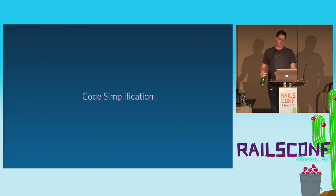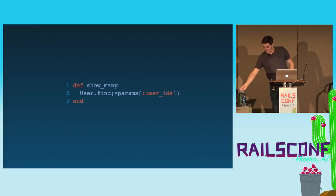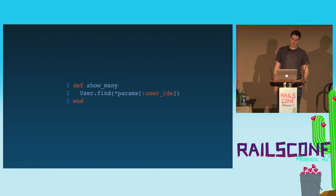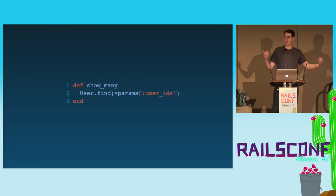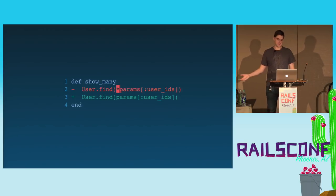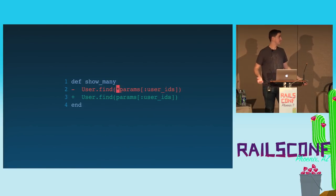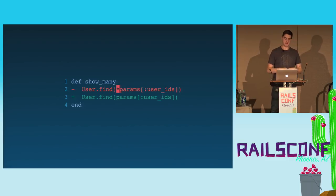Similar to dead code detection, mutation testing is also a great resource for simplifying your code. Here's another method inside a controller — we're taking in a user_ids parameter, which is presumably an array of integers, calling the user finder and splatting the input. The tool is going to say you don't actually need the splat here — you can just pass in the array and it behaves the same. So again, we're learning more about ActiveRecord's interface at basically zero cost.